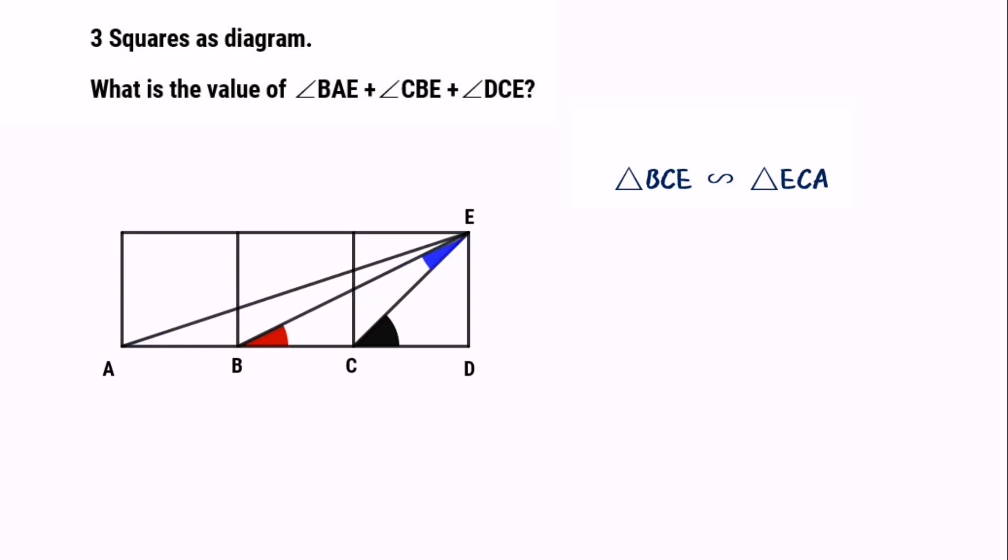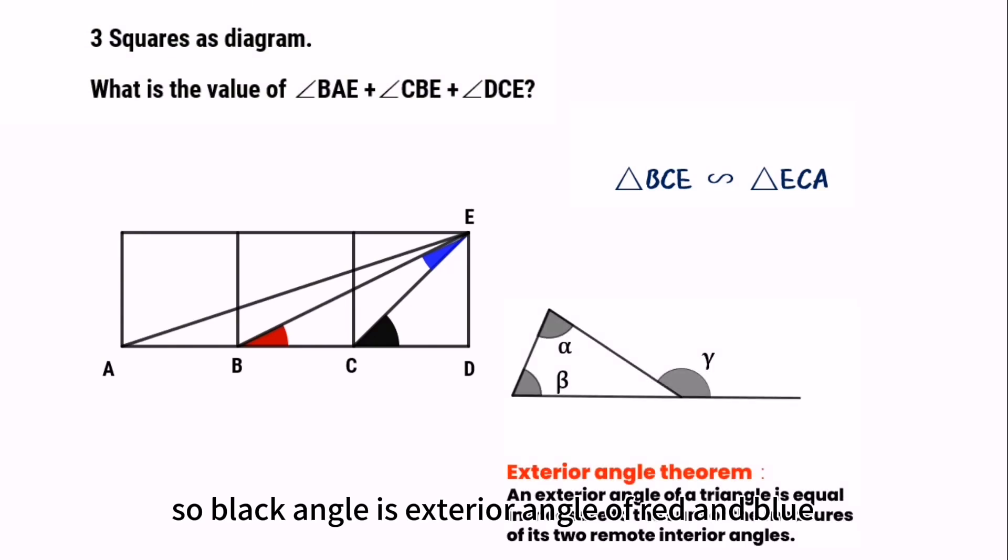we can get angle BCE equals angle BEC. So, the black angle is the exterior angle of red and blue. So, we can get black equals red plus blue.